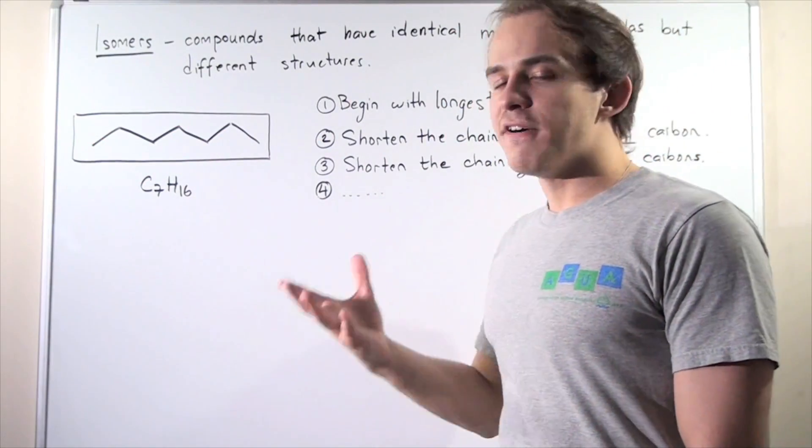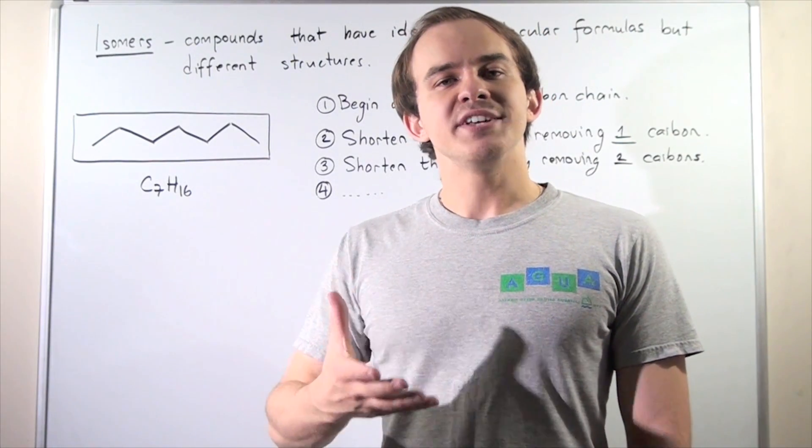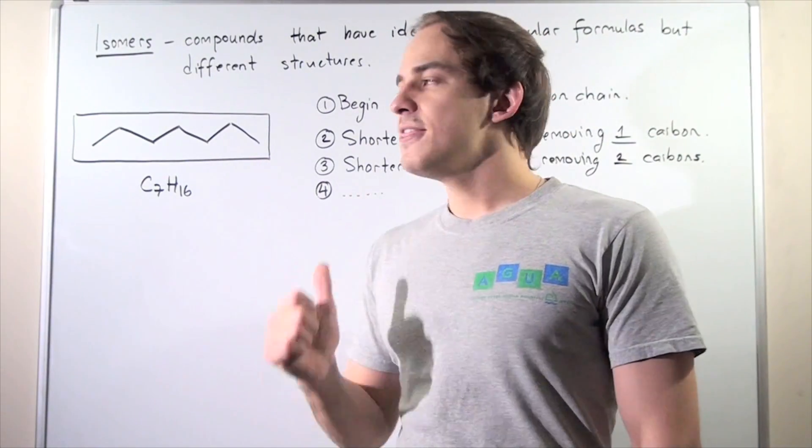So whenever we try to find isomers of alkanes, it usually helps to have a systematic approach. And that's exactly what we use in this example.